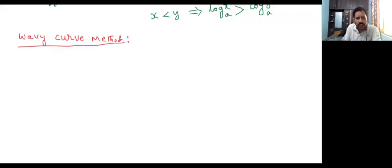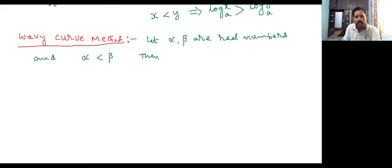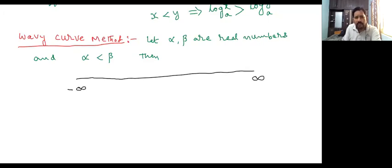This is one method. Now, how to write the intervals. Let alpha and beta be real numbers with alpha less than beta. Draw these numbers on the number line — here is plus infinite, here is minus infinite. In between there are two numbers: here is alpha, here is beta. These two numbers divide the number line into three parts.